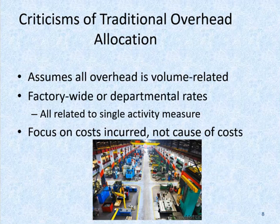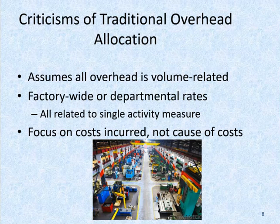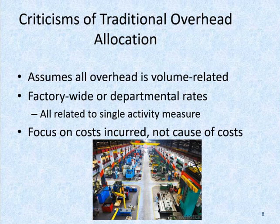Some criticisms of traditional overhead allocation: in recent years, manufacturers and service providers have experienced tremendous change. Advances in computerized systems, technological innovation, global competition, and automation have drastically changed the manufacturing environment. The amount of direct labor used in many industries has greatly decreased, while total overhead costs from depreciation on expensive equipment, machinery, utilities, repairs, and maintenance have significantly increased. When there is no correlation between direct labor and overhead, it's inappropriate to use a plant-wide predetermined overhead rate based on direct labor, and companies experience significant product cost distortions.